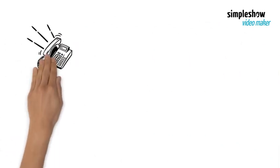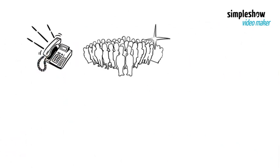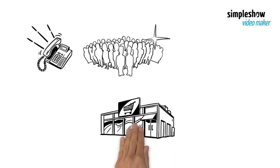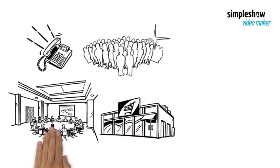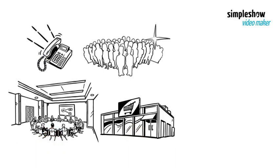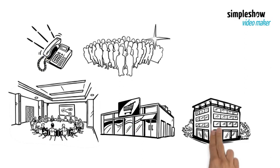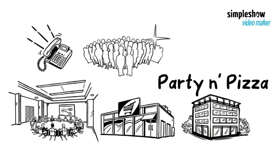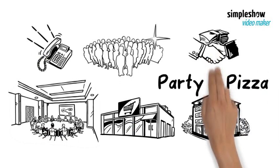Peter gets a lot of new orders from different customers. For example, a grocery store orders Peter's Pizza for retail. A conference orders Peter's Pizza for catering. A company named Party & Pizza wants to partner with Peter for party business.